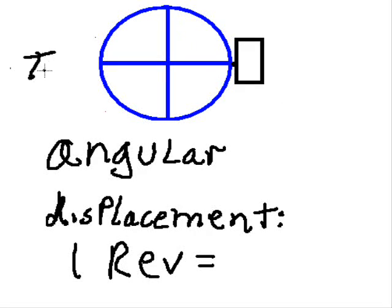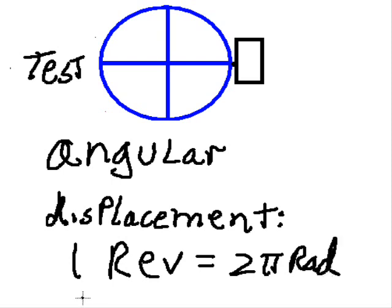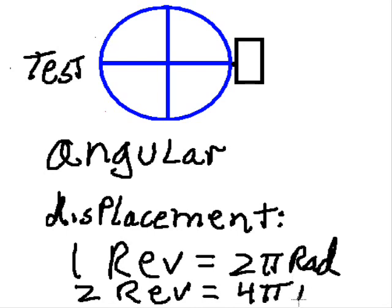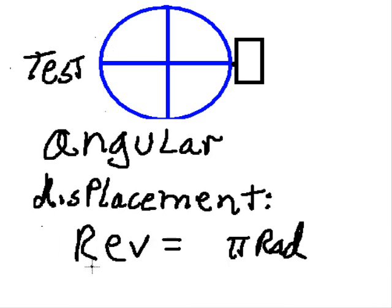Okay, that's a test time. So the angular displacement for one revolution is 2π rad. For two revolutions it will be 2π rad plus 2π rad, that's 4π rad.